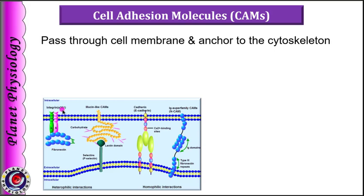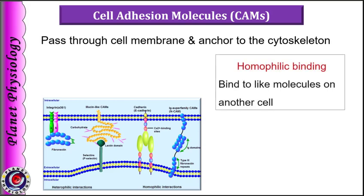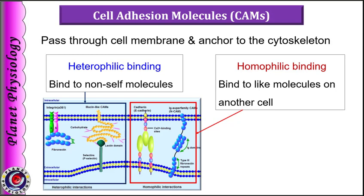The intracellular domain usually attaches to the cytoskeleton and is also involved in cell signaling mechanisms, whereas the extracellular domain attaches to the proteins of neighboring cells. Based on these extracellular interactions, adhesion molecules can be divided into two categories: those with homophilic binding and those with heterophilic binding. In homophilic binding, cell adhesion molecules bind with the same type of cell adhesion molecules of another cell. In heterophilic binding, two different adhesion molecules of neighboring cells bind with each other.